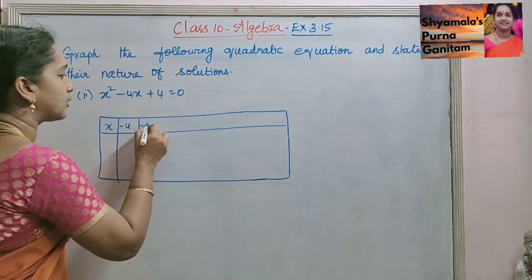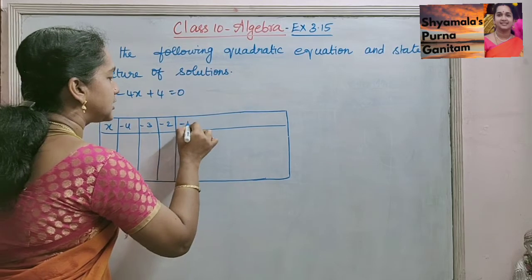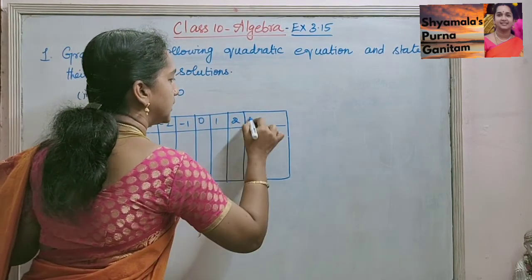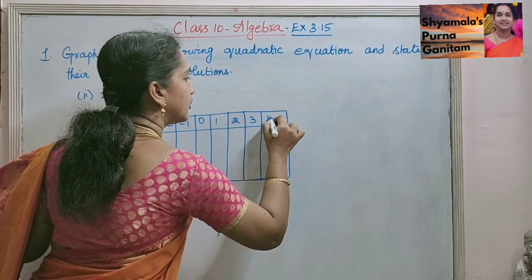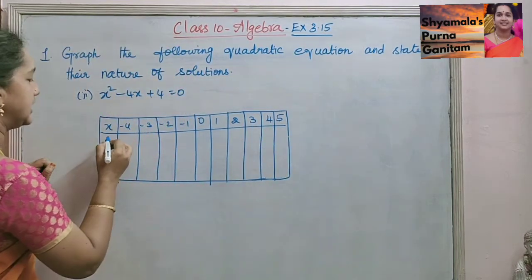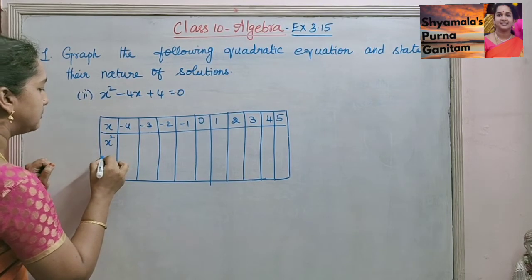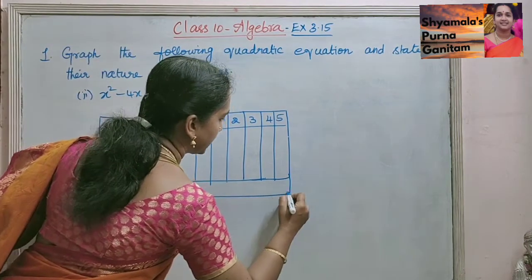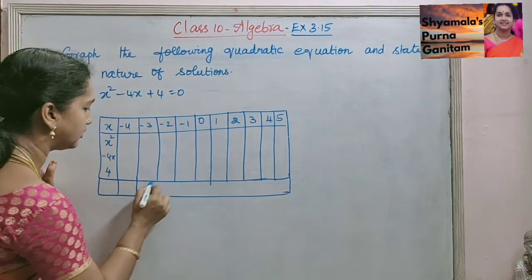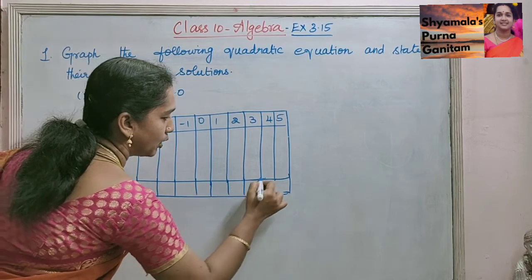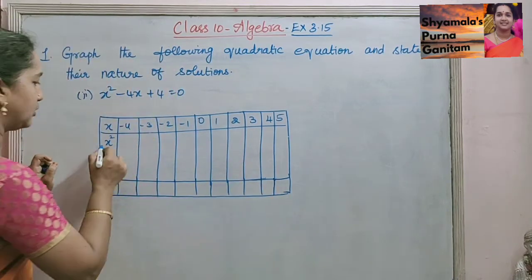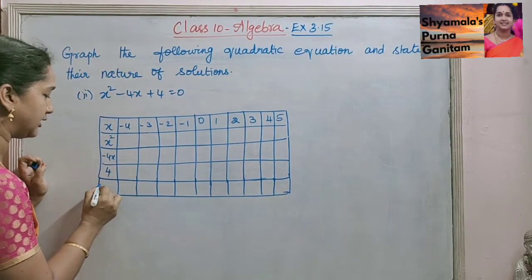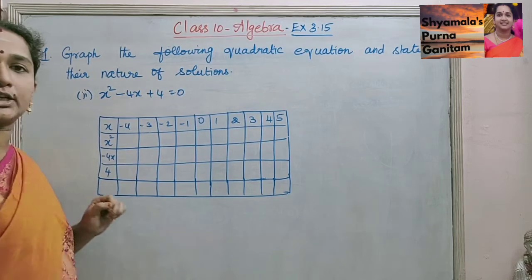We will take x values as minus 4, minus 3, minus 2, minus 1, 0, 1, 2, 3, 4, and 5. The columns are x squared, minus 4x, plus 4, and the last column is y, where y equals x squared minus 4x plus 4.